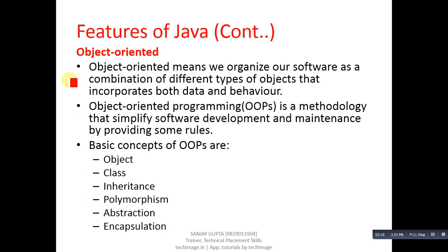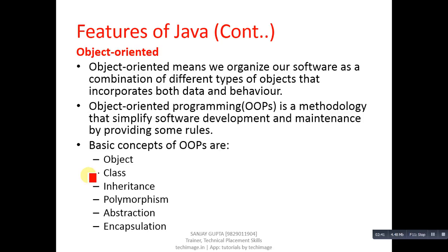Next is object-oriented. Object-oriented means we organize our software as a combination of different types of objects that incorporate both data and behavior. Object-oriented programming is a methodology that simplifies software development and maintenance by providing some rules. The basic concepts of OOP available in Java are: object, class, inheritance, polymorphism, abstraction, and encapsulation — which are also available in C++.